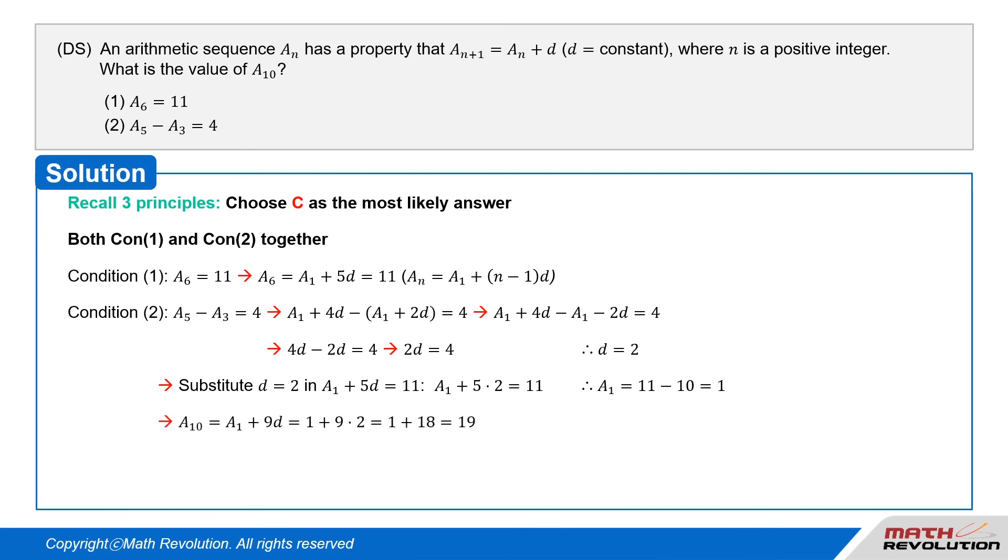Therefore, a_10 = a_1 + 9d = 1 + 9(2) = 1 + 18 = 19.